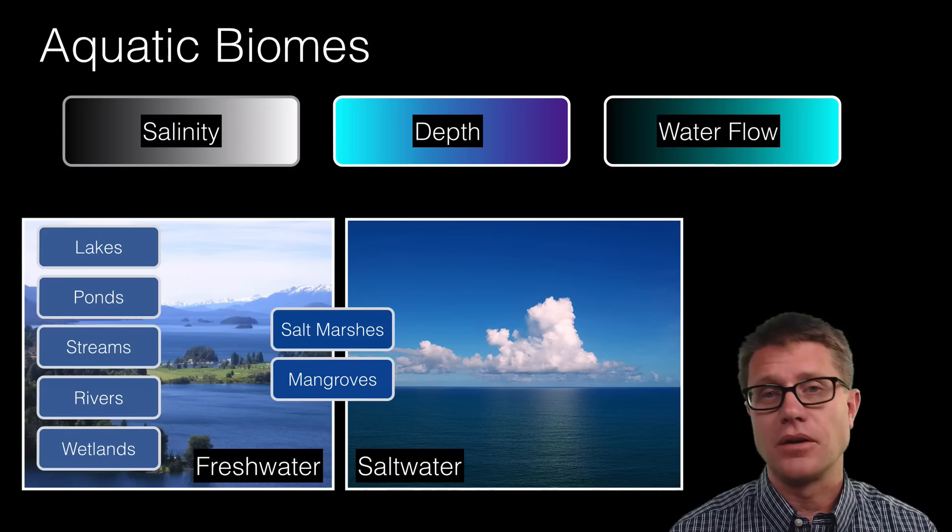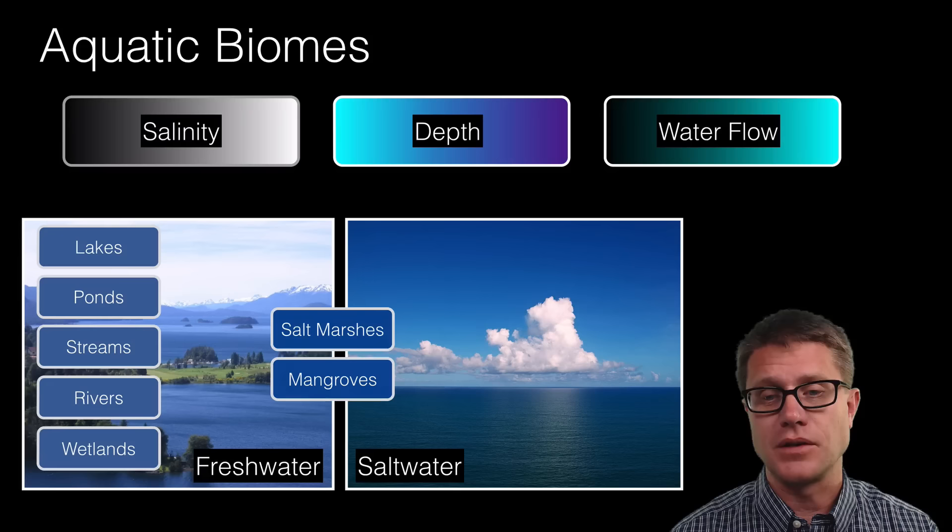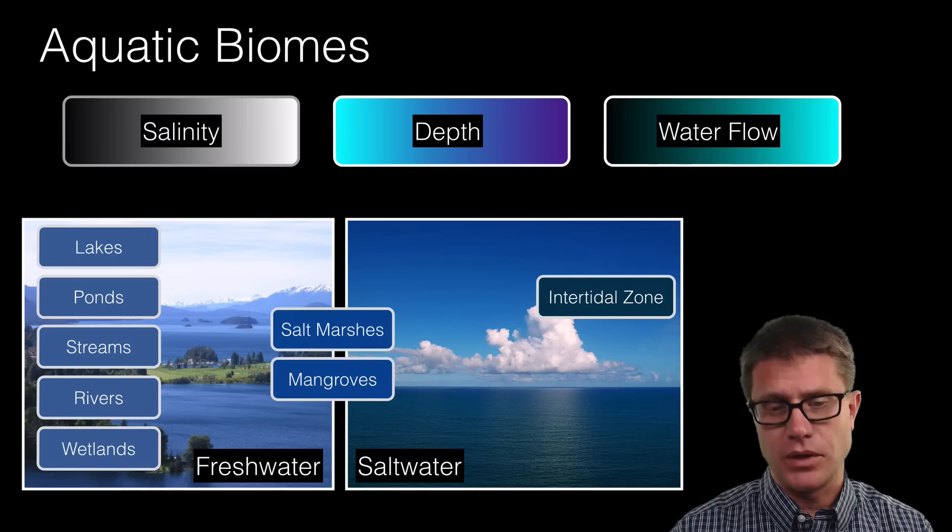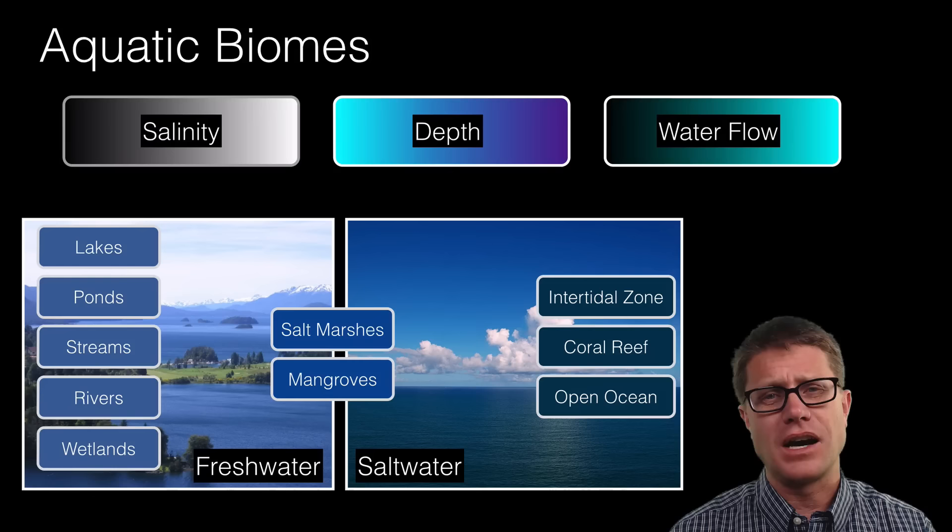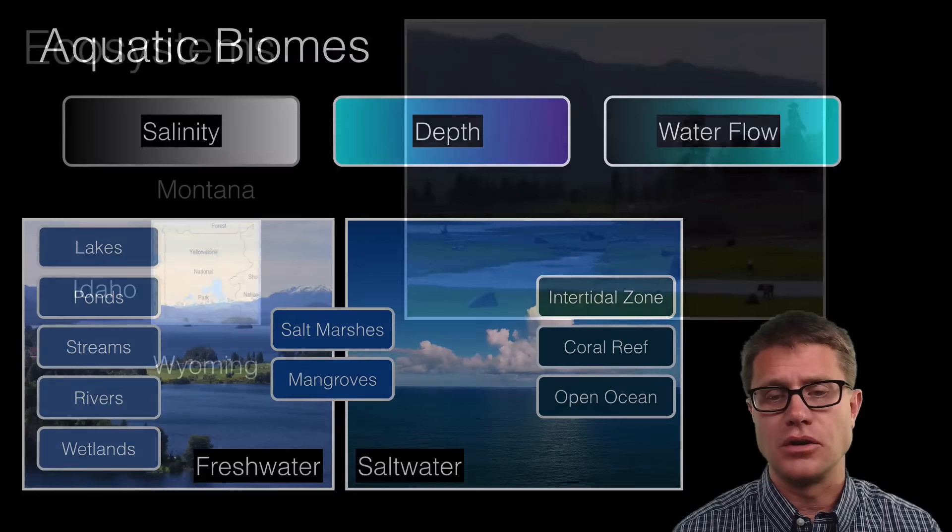Estuaries are like this. Or we could have mangroves, based on a tree that can grow in salt water. Those are important as a border between marine and terrestrial systems. As we move out to the ocean itself we have intertidal zones. So that is when the tide comes in and out. Coral reefs you are probably familiar with and open oceans. Open oceans are really not a super productive ecosystem out in the middle of the ocean, only near the top where we get a certain amount of light.